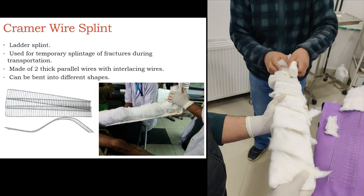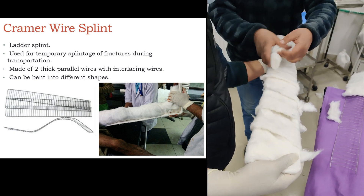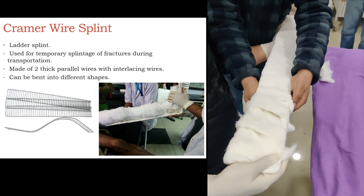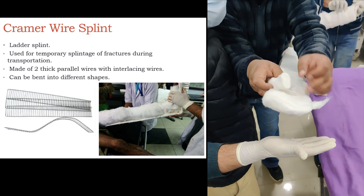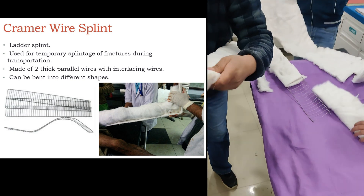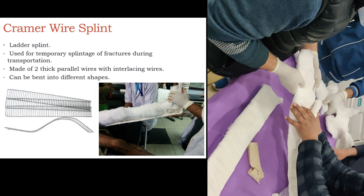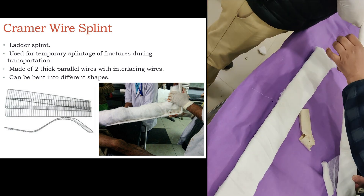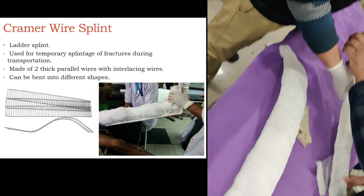It comes in different lengths and breadths so that it can be used at various places. In the video you are seeing cotton being applied over the crammer wire, and a roll bandage is being used to secure it, so as to make the crammer wire more comfortable once it is applied across the limb of a patient.